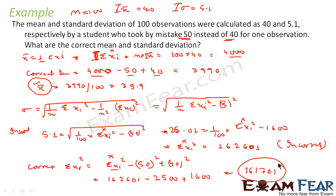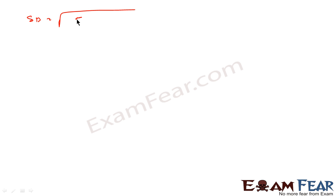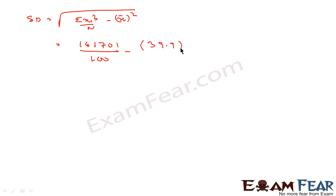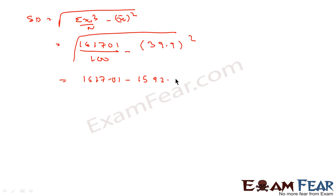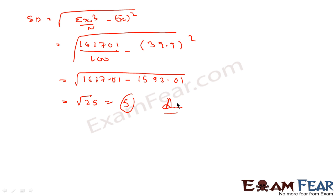Now using these values, correct SD = √[(correct Σxi²)/n − (correct mean)²] = √[161701/100 − 39.9²] = √[1617.01 − 1592.01] = √25 = 5. So the correct standard deviation is 5.